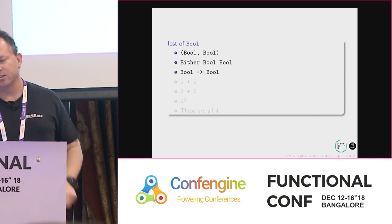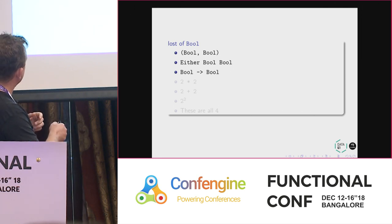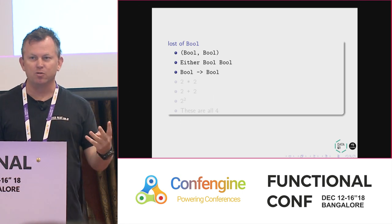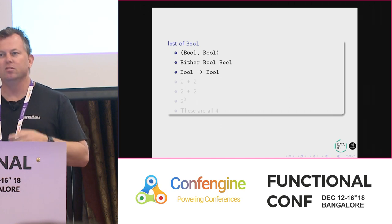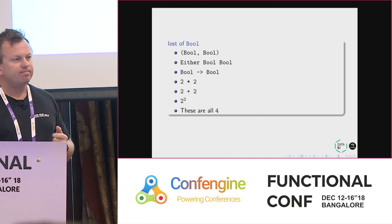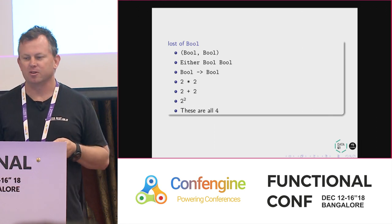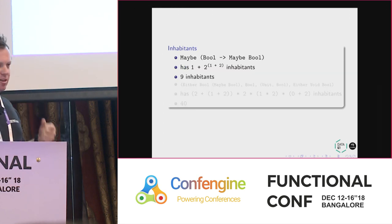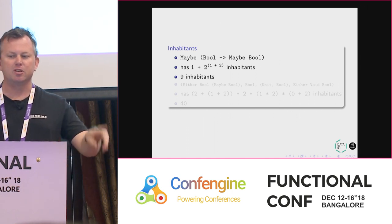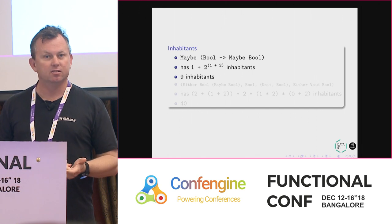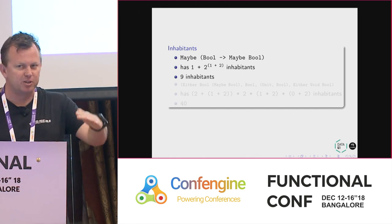If I said to you two times two, and two plus two, and two to the power of two — they're all four. All of these types are isomorphic. If I asked for a value of Either Bool Bool, you'll give me one of four values: left true, left false, right true, right false. I can count the inhabitants by just doing some algebra. I can also calculate more complex types — Maybe of a function Bool to Maybe Bool gives one plus three to the power of two, which is nine possible inhabitants. Nothing else you can do.